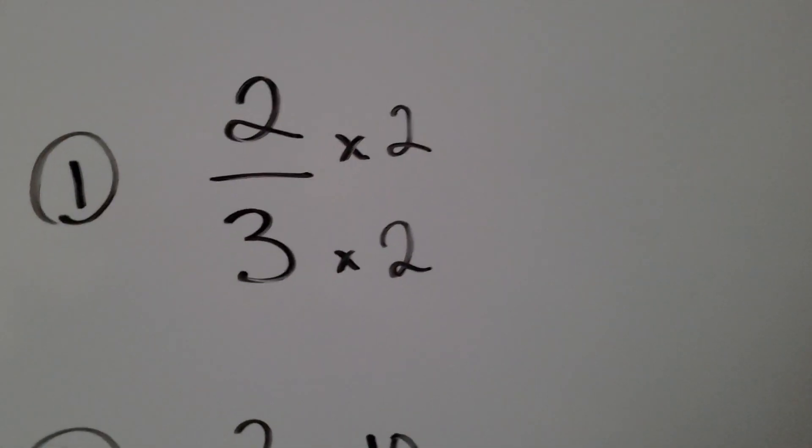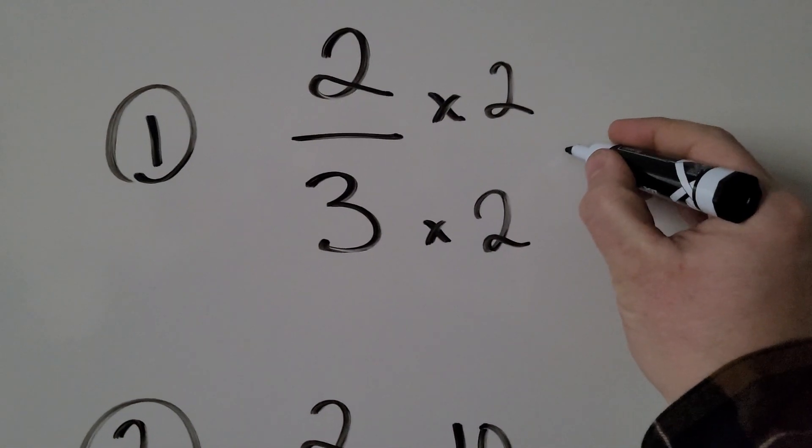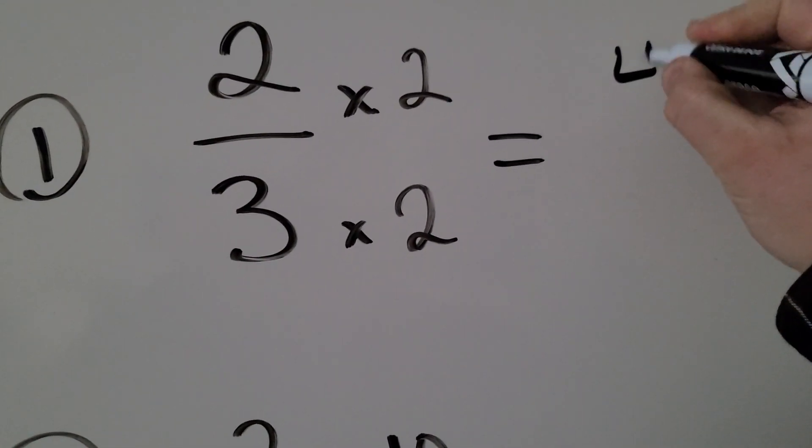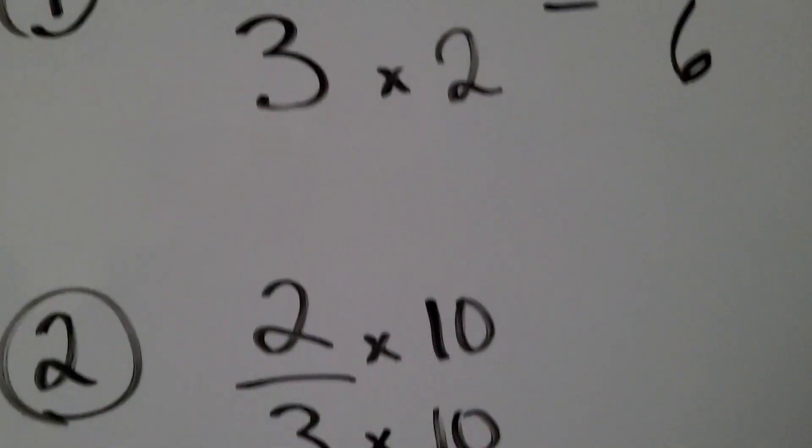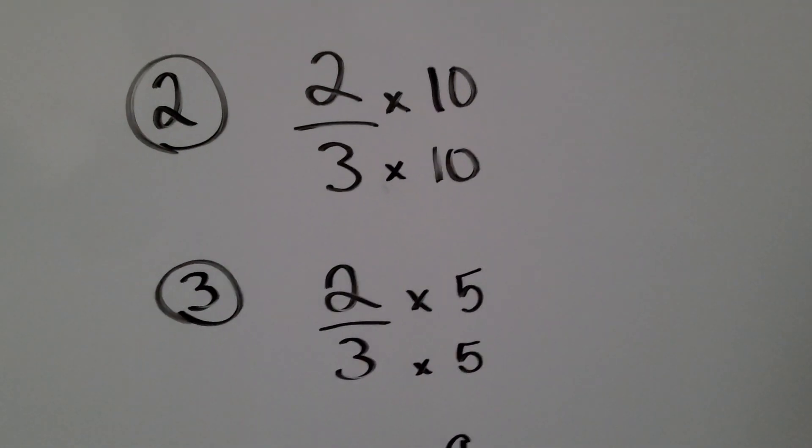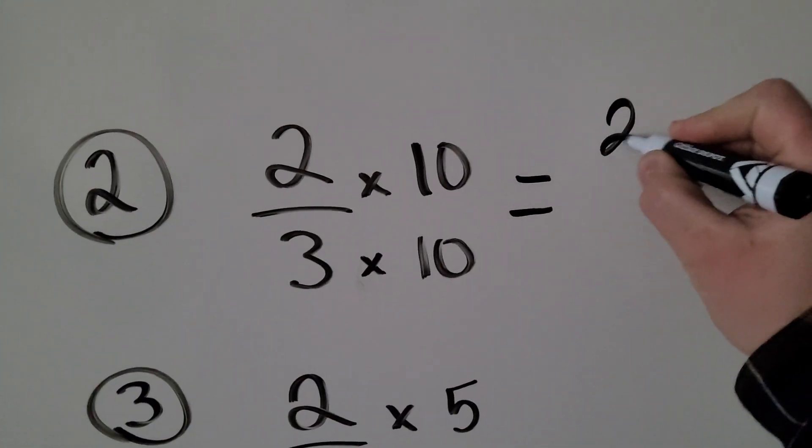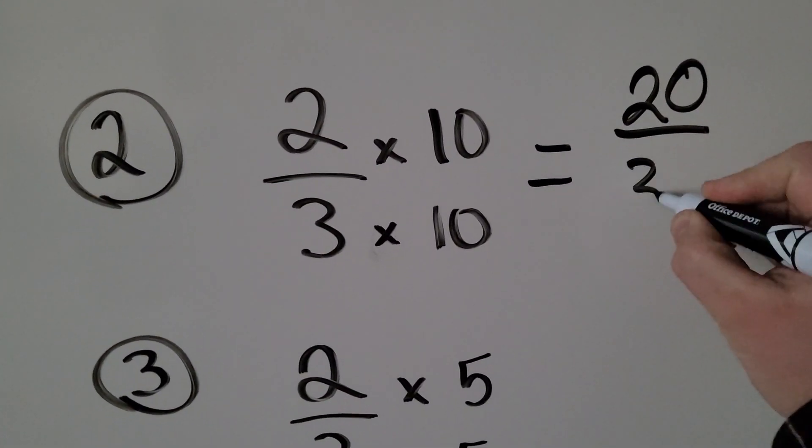So for my first one, I chose to multiply times two top and bottom. So that gives me four-sixths as an answer. My second one I chose to multiply times ten. So two-thirds is equivalent to twenty-thirtieths.